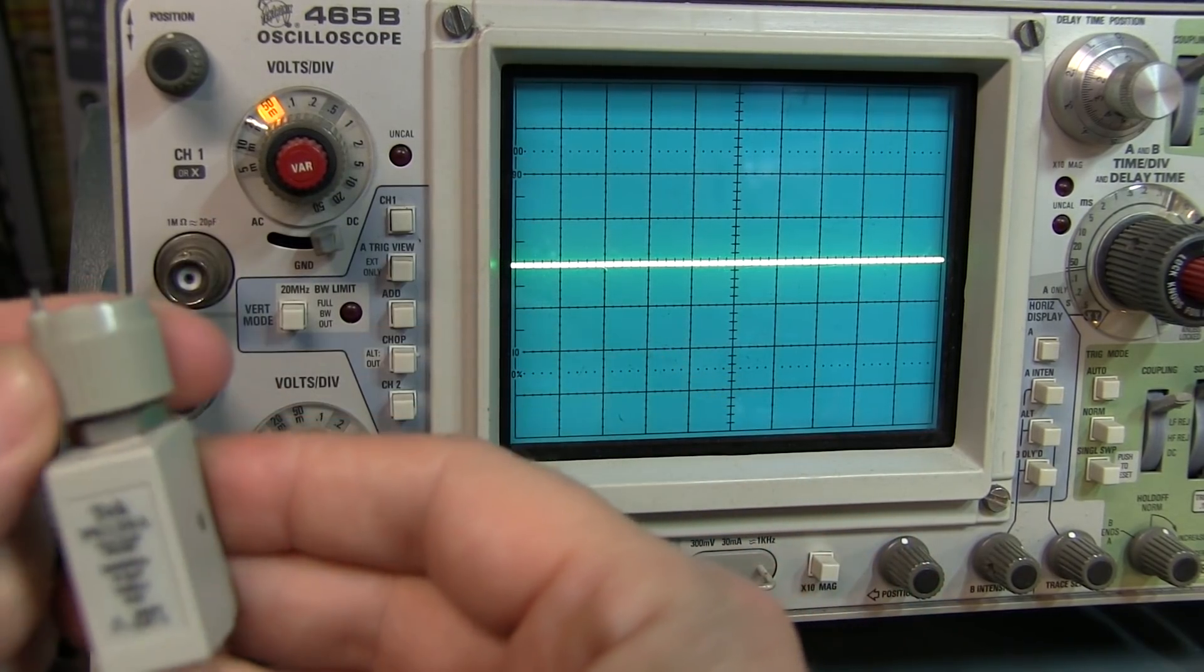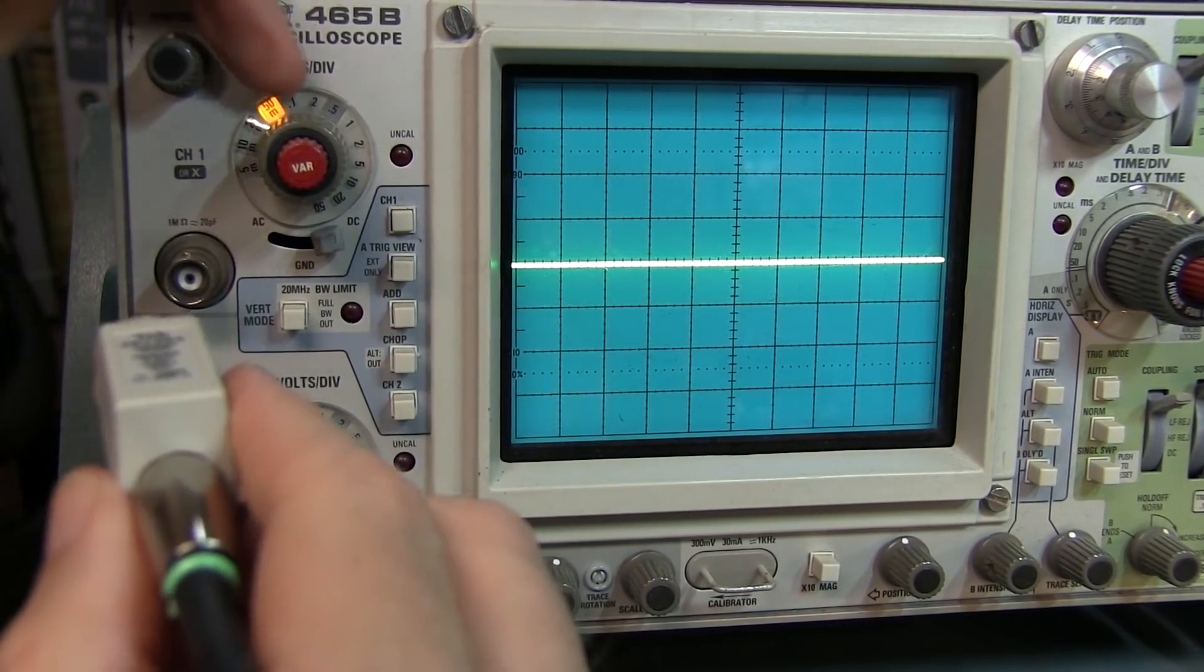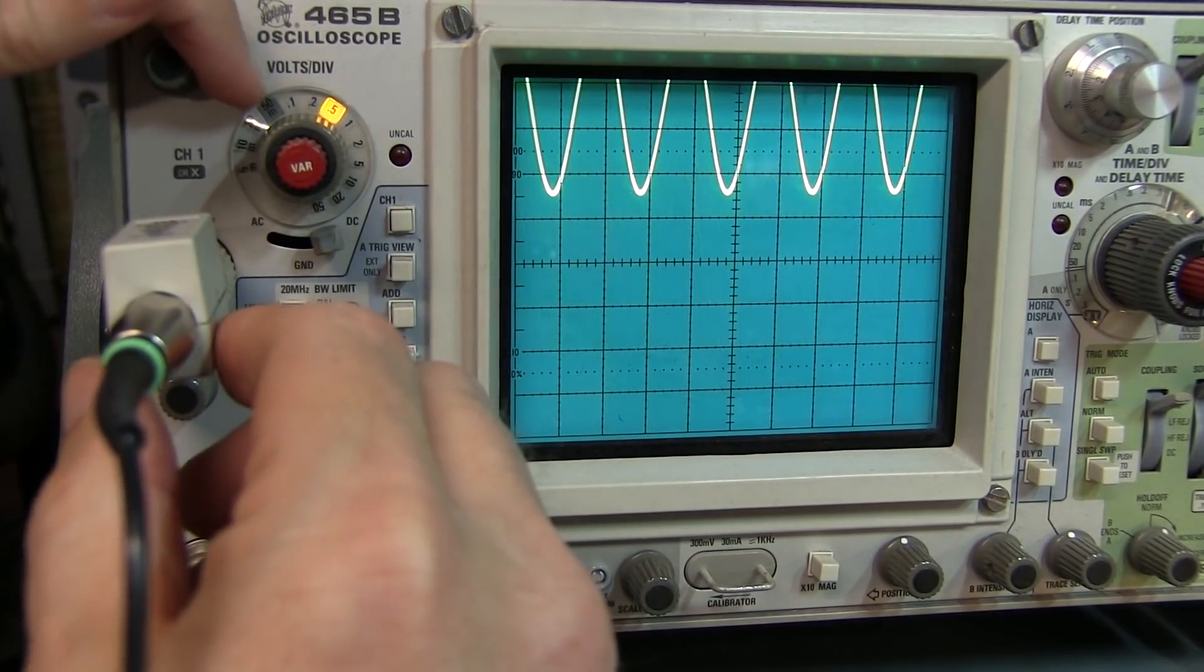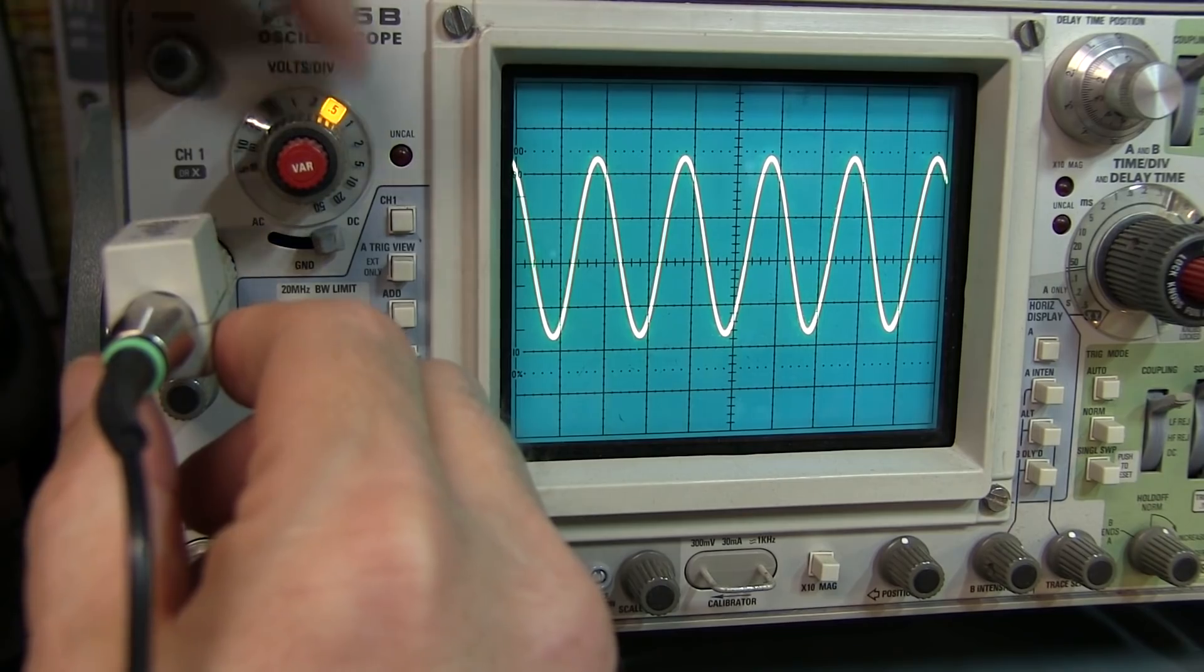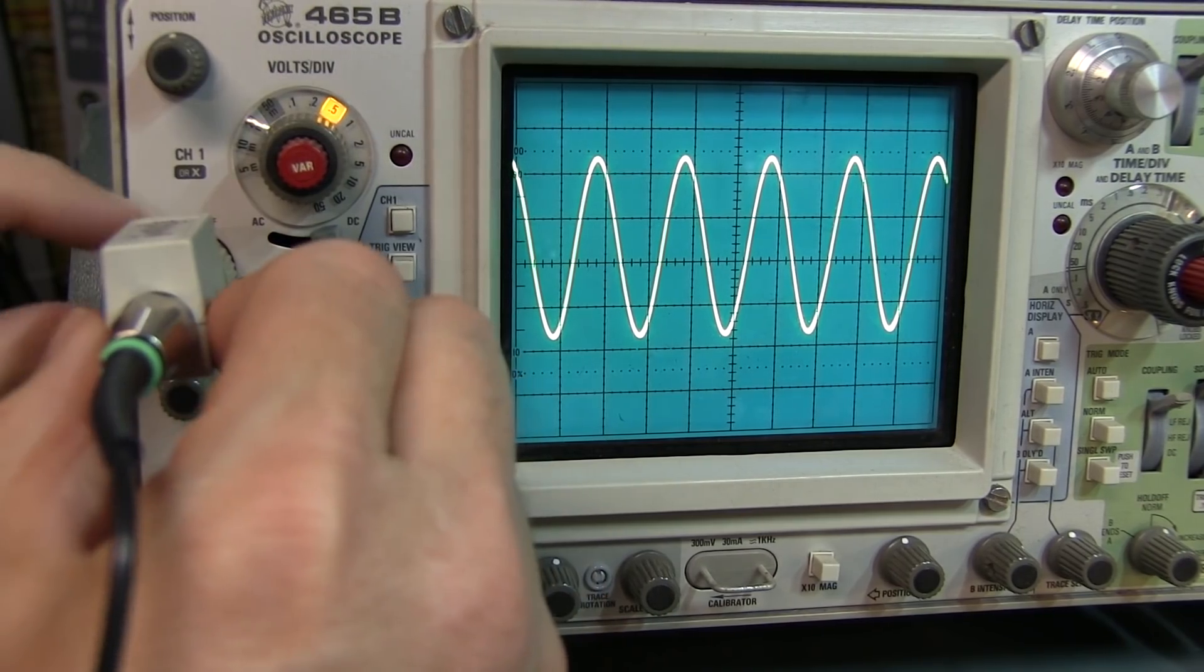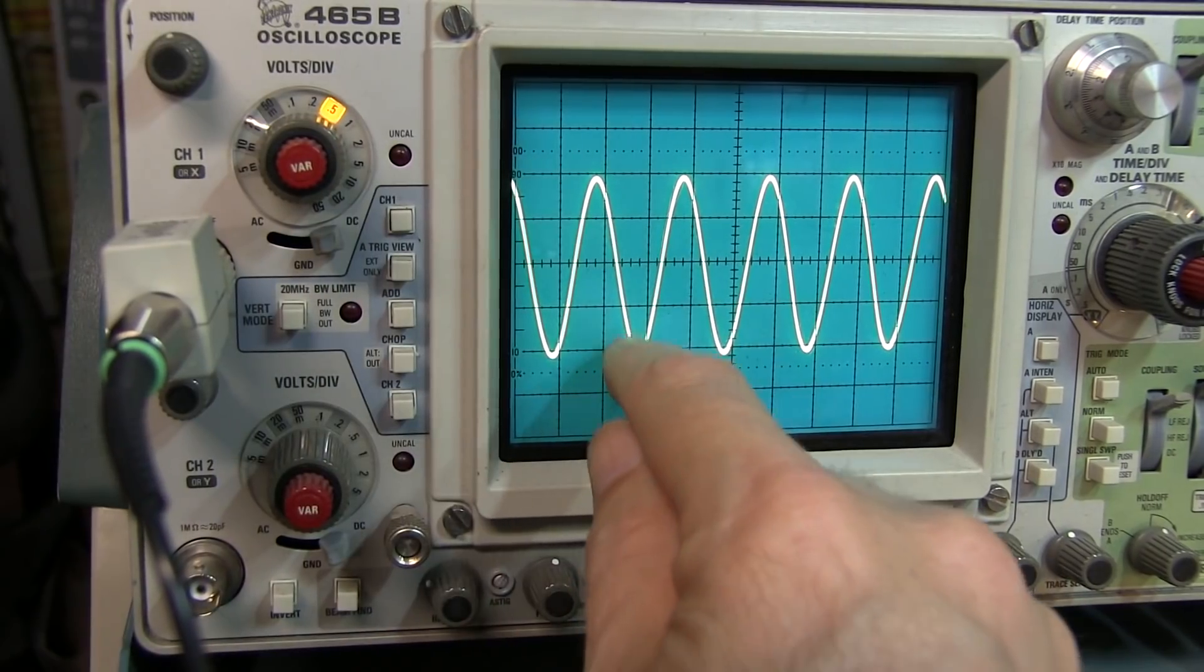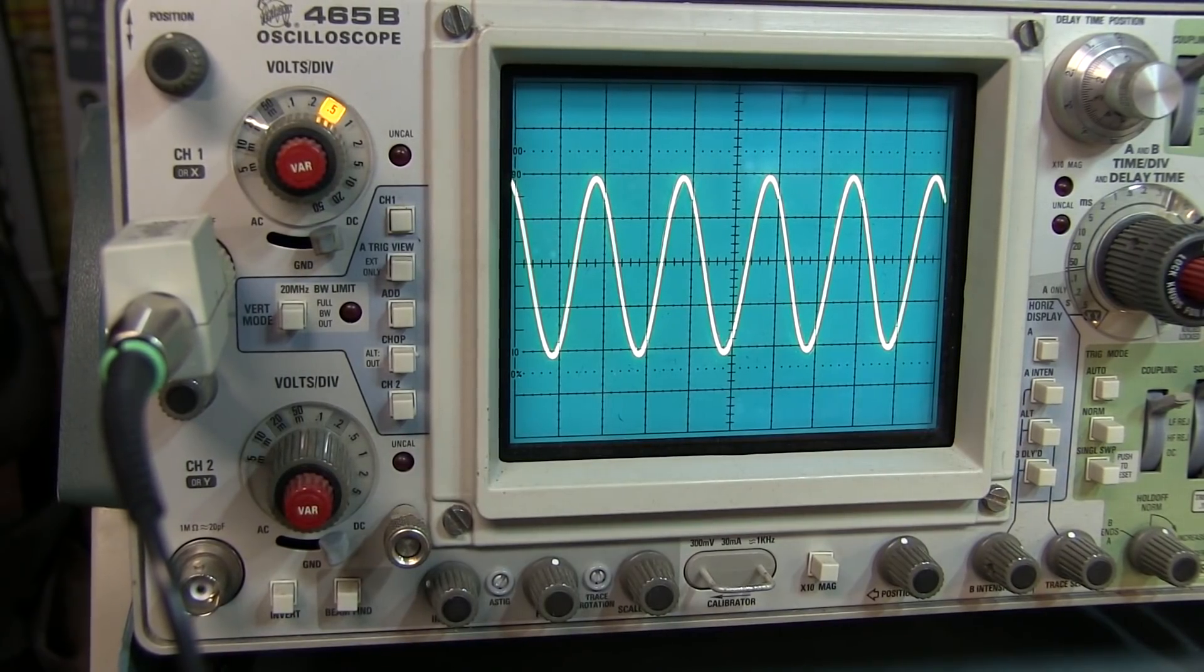You'll notice when I plug this probe in that the scale indicator on the vertical control knob changes, in this case from 50 millivolts to a half a volt per division. I'm probing that same signal, and now it's properly showing a half a volt per division, and giving me the proper two volt peak to peak reading.